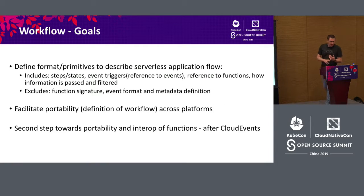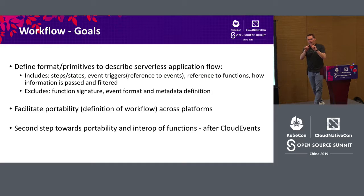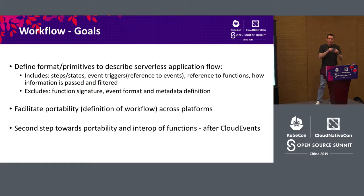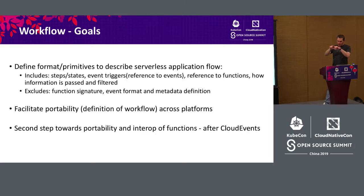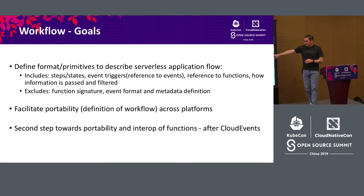The goal here is to define the basic primitives for how to string together various function invocations — including states, steps, triggers, references to functions that get invoked, and possibly some filtering. Importantly, it's talking about how to wire these things together — what comes next and how to decide what comes next. It's not going to talk about how to invoke the function itself or particular function signatures. It ignores that. It just says what function to invoke next — a very important distinction. This is all about fostering portability and interoperability across platforms, and it's the second step for the Serverless Working Group after Cloud Events.